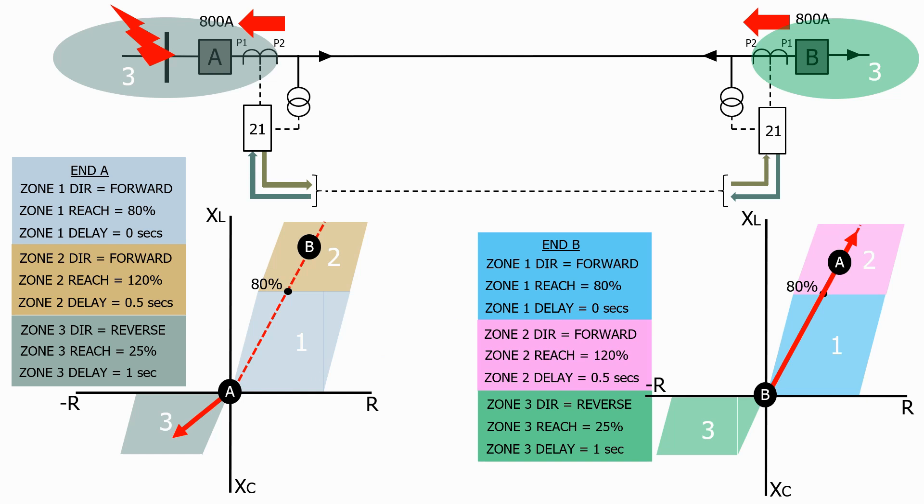The end A impedance relay now sees the fault in zone 3 and sends a zone 3 pickup signal via the communication channel to the remote end.